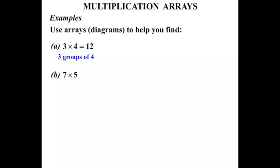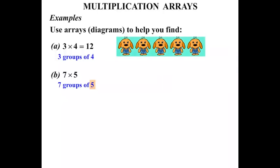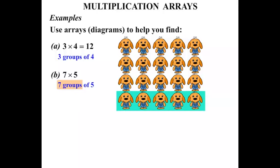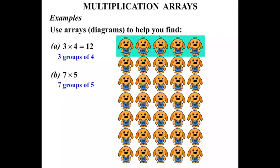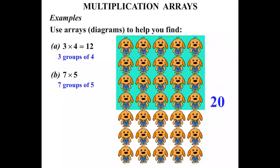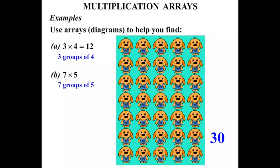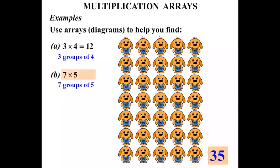Part B: seven times five — seven lots of five. We can think of that as seven groups of five. What about five puppy dogs? One, two, three, four, five — very cute, aren't they? So that's our one group, and we want seven groups. So we've got one group, two groups, three groups, four groups, five groups, six groups, seven groups. Let's count them in fives: five, ten, fifteen, twenty, twenty-five, thirty, one more five would make thirty-five. So seven times five, or seven lots of five, equals thirty-five.